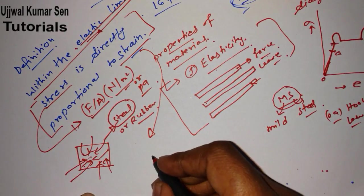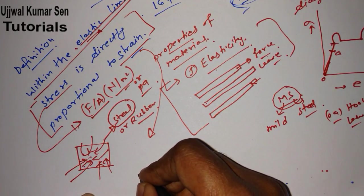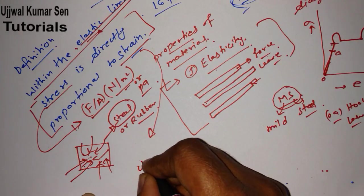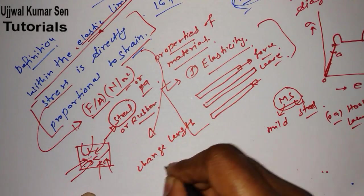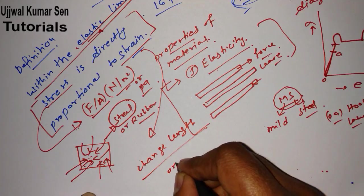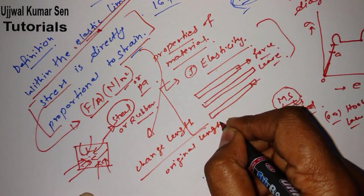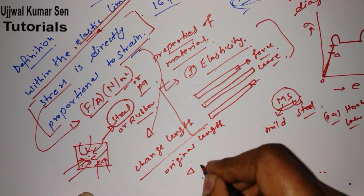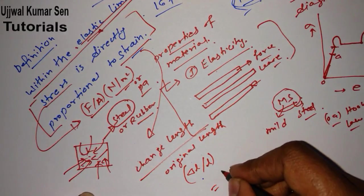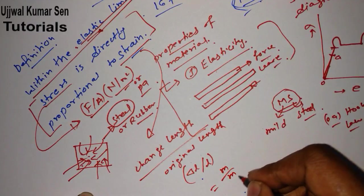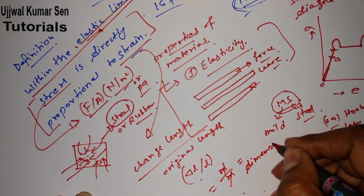Now, what is strain? Strain means change in length divided by original length — that is delta L divided by L. Since it is meter divided by meter, strain is a dimensionless quantity.